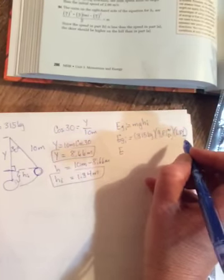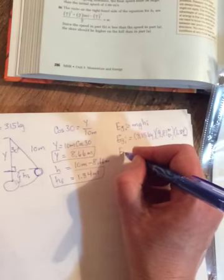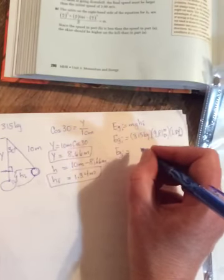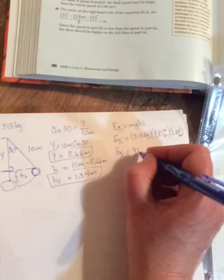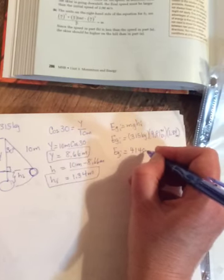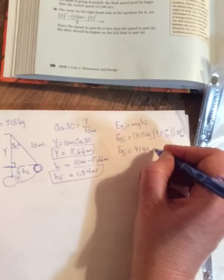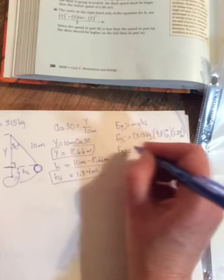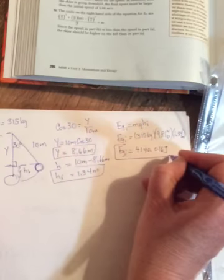And when you do that, you should get an energy, gravitational energy at the top of 4140.016 joules. So that is the first part of the question.